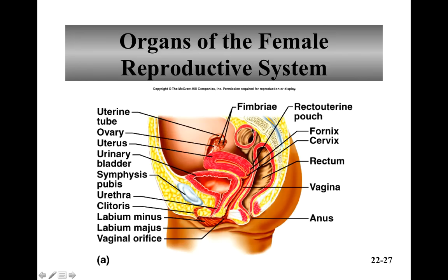This is part one for the female reproductive system. The female reproductive system has a lot of similarities to the male reproductive system. Their primary sex organs are the ovaries, and the ovaries are there to produce the gametes — the sex cells, which are the eggs for females. The ovaries also produce hormones. Secondary sex organs include internal and external accessory sex organs.